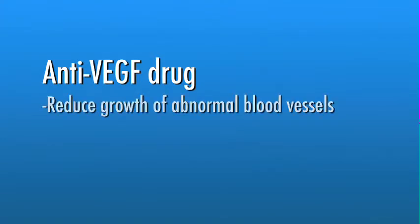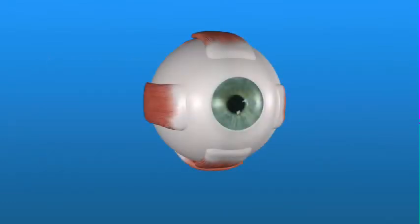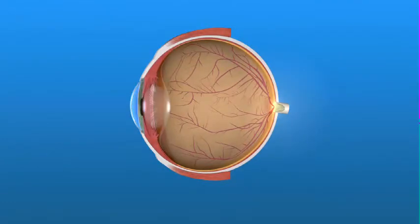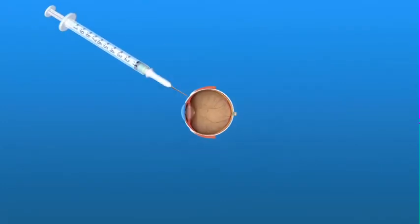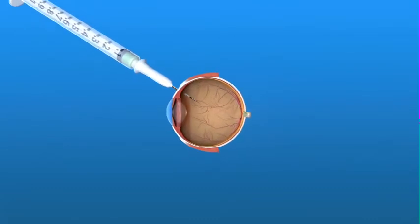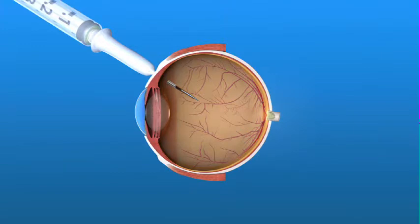An anti-VEGF drug can help reduce the growth of abnormal blood vessels, which helps to prevent bleeding, scar tissue, and other problems that can cause vision loss. The anti-VEGF drug is administered directly to the eye in an outpatient procedure. After the eye has been numbed with an anesthetic, the anti-VEGF drug is injected into the eye with a very fine needle. Some people may need multiple anti-VEGF injections over a period of months. In some cases, anti-VEGF treatments may be combined with laser surgery, or laser treatment may be used alone.